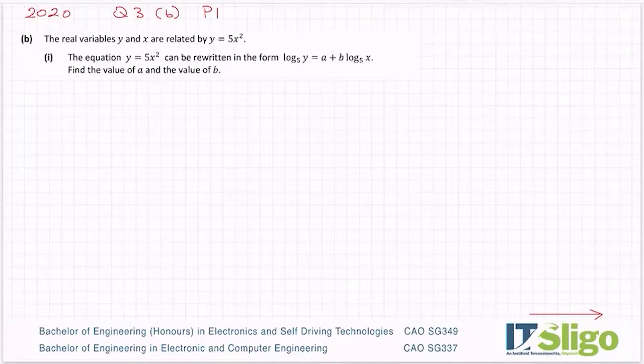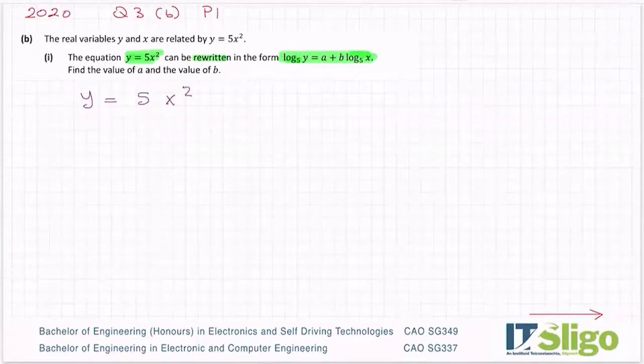OK, let me have a look at those two equations. So we have Y equals 5X squared and it can be rewritten. So I'm starting with Y equals 5X squared if it can be rewritten. So what I do is I tend to compare the sides and see what did they do to Y to make it log to the base 5 of Y.